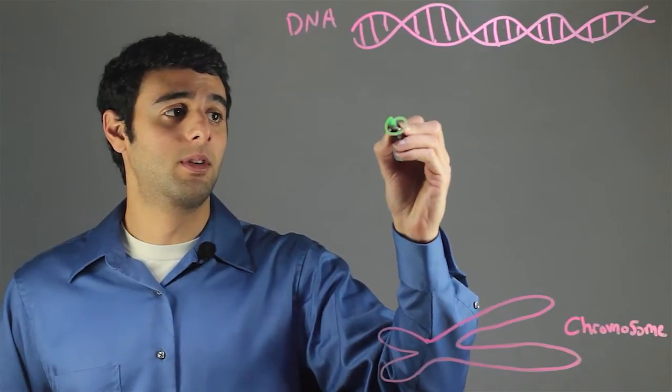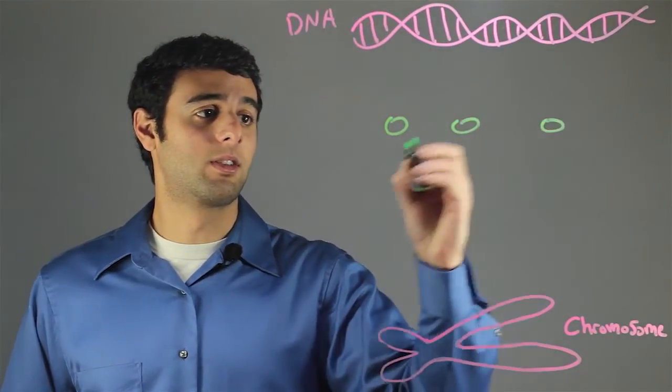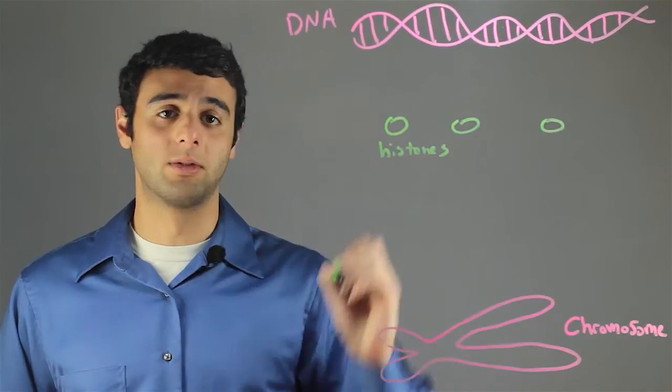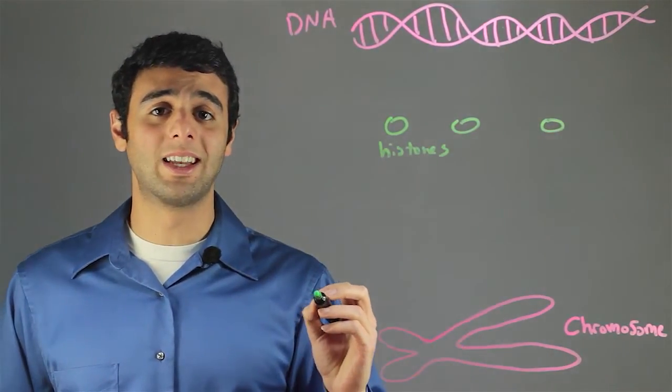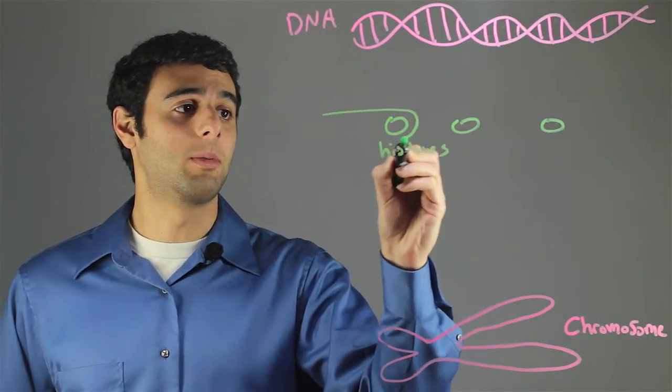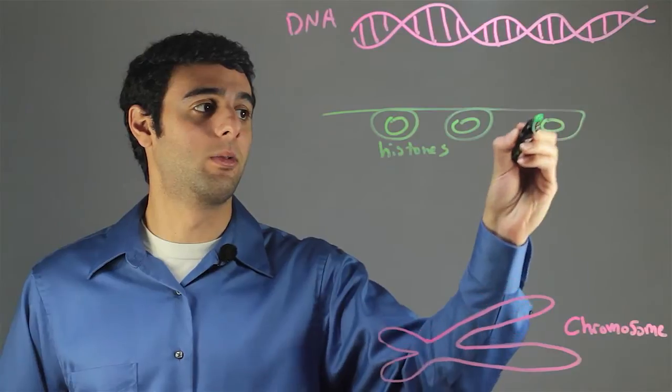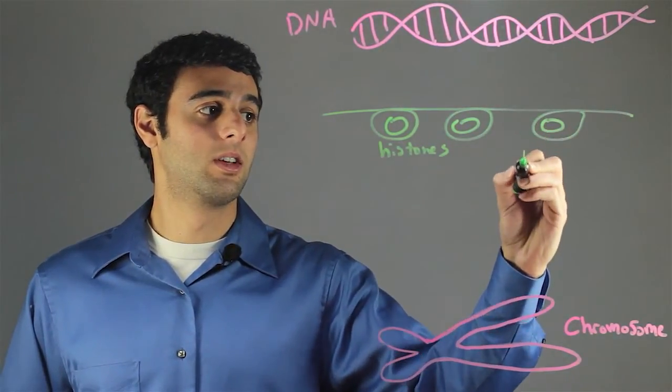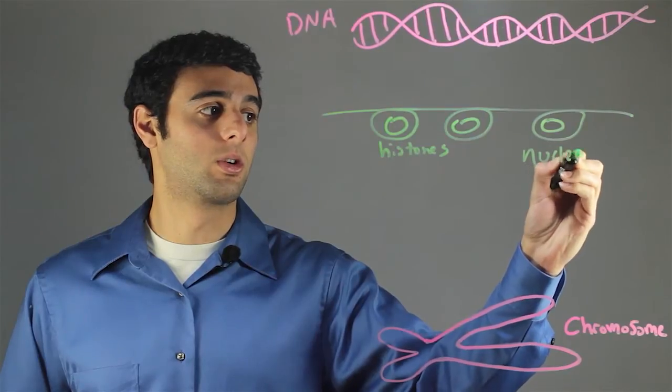So the first step is for the DNA to wrap around histones. So I'll be drawing the DNA as a straight line, wraps around the histone, wraps around the histone, and wraps around the histone. Each one of these wraps is now called a nucleosome.